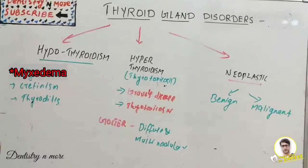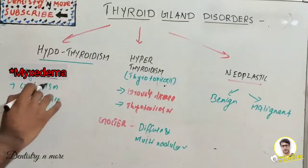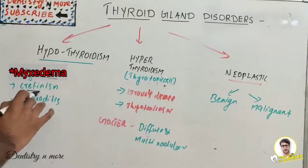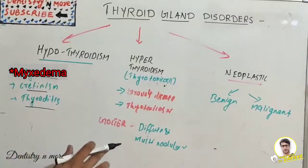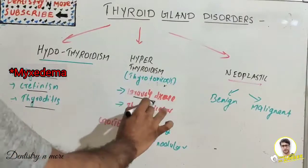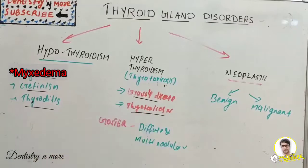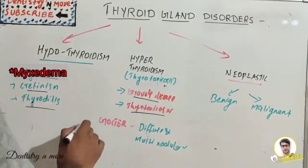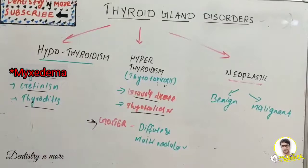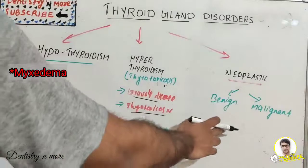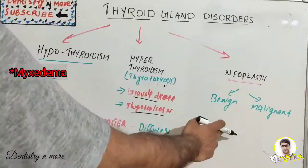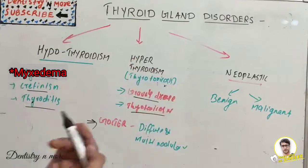In hypothyroidism, where the gland is not functioning properly, we have under-production of thyroid hormones, which can lead to myxedema, cretinism, and thyroiditis. The over-production of thyroid hormone leads to Graves' disease or thyrotoxicosis. Then we have goiter, characterized by diffuse and multinodular pattern, and the neoplastic process which can be benign or malignant.